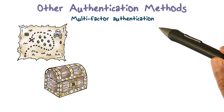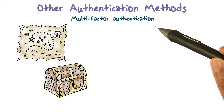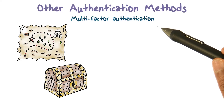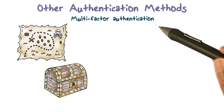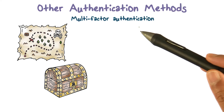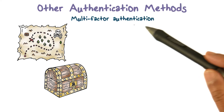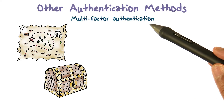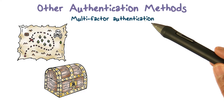We talked about these different methods — something you know, something you have. Those are called factors. The first is the secret you know factor, the second is something you have factor, and the third is who you are factor. It doesn't have to be just one factor; you can actually have multi-factor authentication.